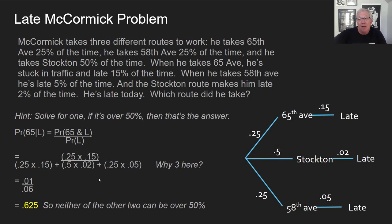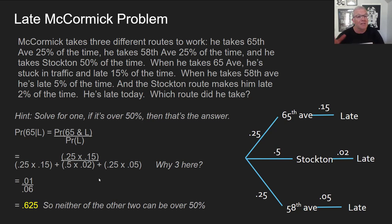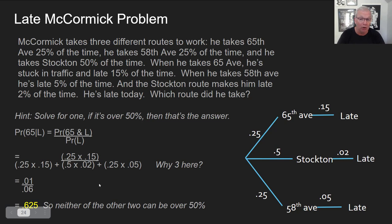That means the other two — Stockton and 58th Avenue — have to add up to 37.5% of the late occurrences. So probably he took 65th if he's late today. He might have taken one of the others, but probably by a margin of 0.625, he took 65th Avenue.